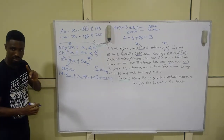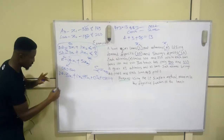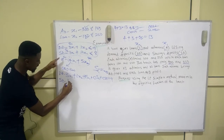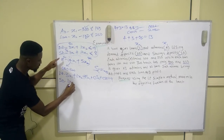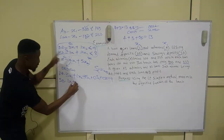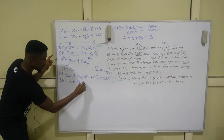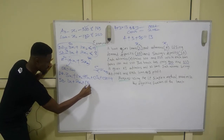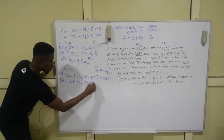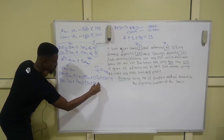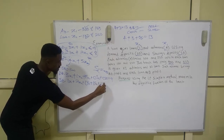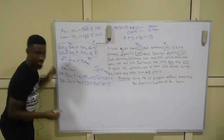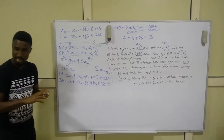For the DD constraint equation: 3x1 + 1x2 + 1s1 + 0s2 + 0z = 9. For the SD constraint: 1x1 + 2x2 + 0s1 + 1s2 + 0z = 8.